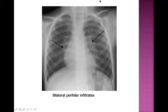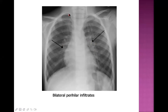Looking at the chest X-ray: there are perihilar infiltrates near the hilum of the lung. To confirm hyperinflation, count the ribs from the anterior side — if more than six ribs are visible on the anterior side, that supports the diagnosis of hyperinflation.